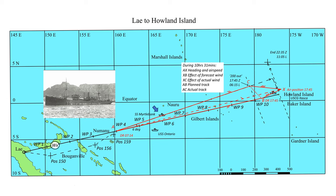The Electra probably passed about 60 miles south of Nauru, where a new lighthouse had been installed visible at 34 miles at sea level. They were about 120 miles north of USS Ontario, which never heard anything on the radio. Seeing the SS Myrtle Bank when she was expecting to see USS Ontario may have encouraged Earhart to think that they were on track.